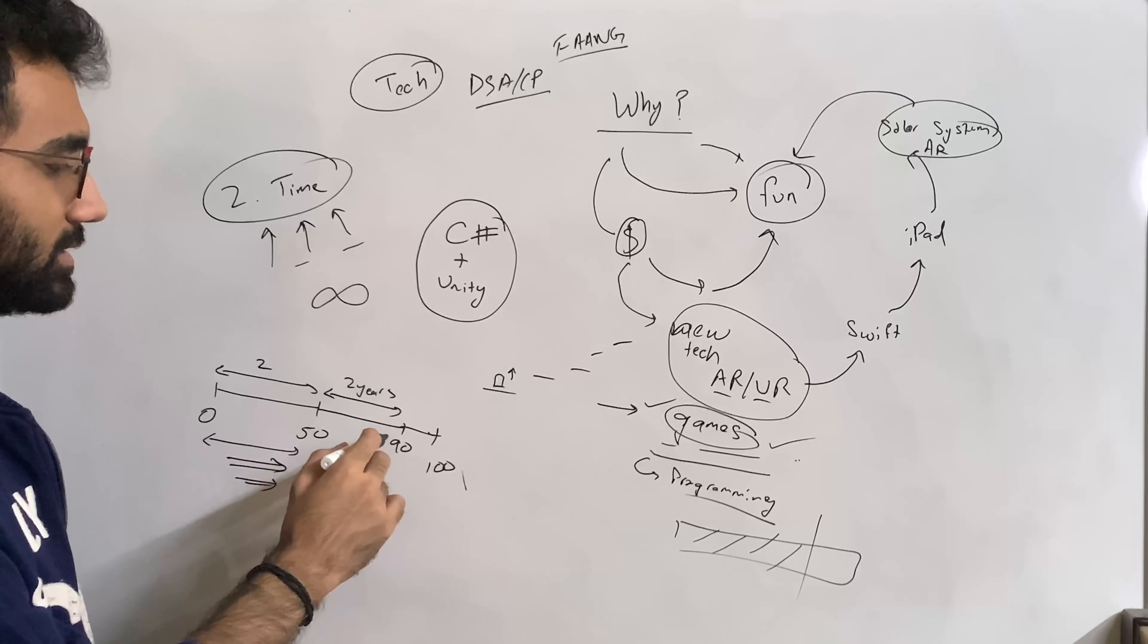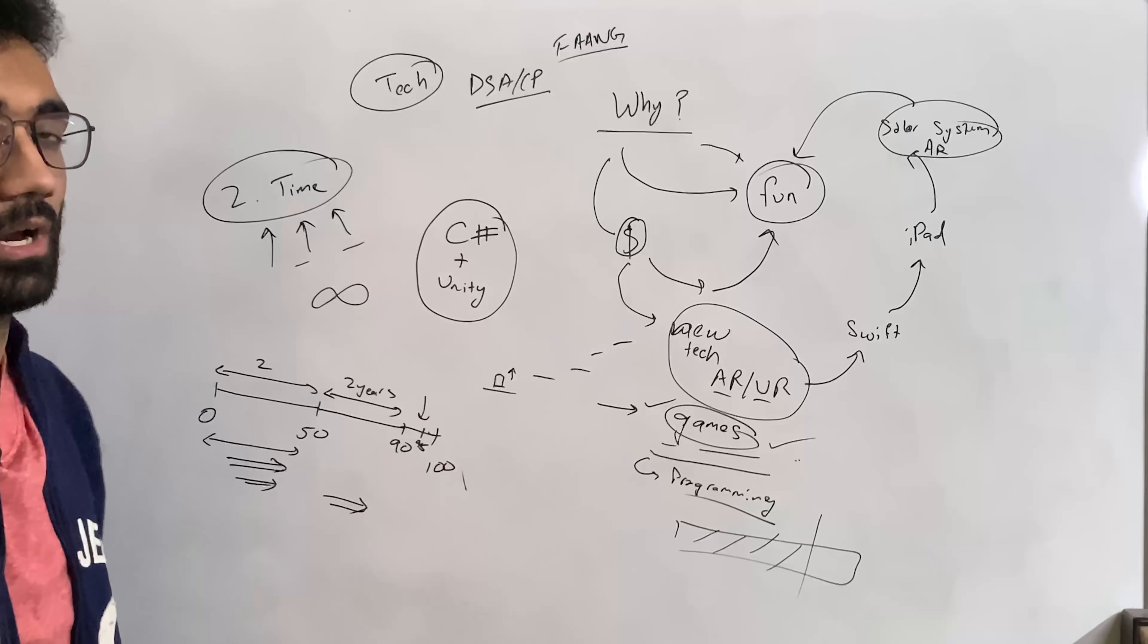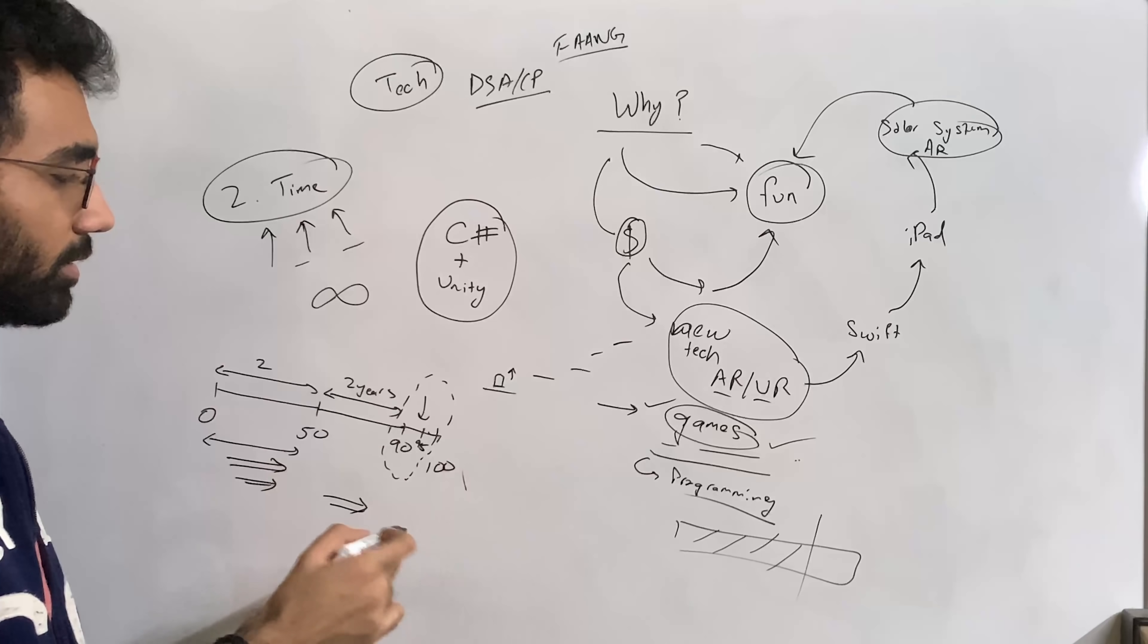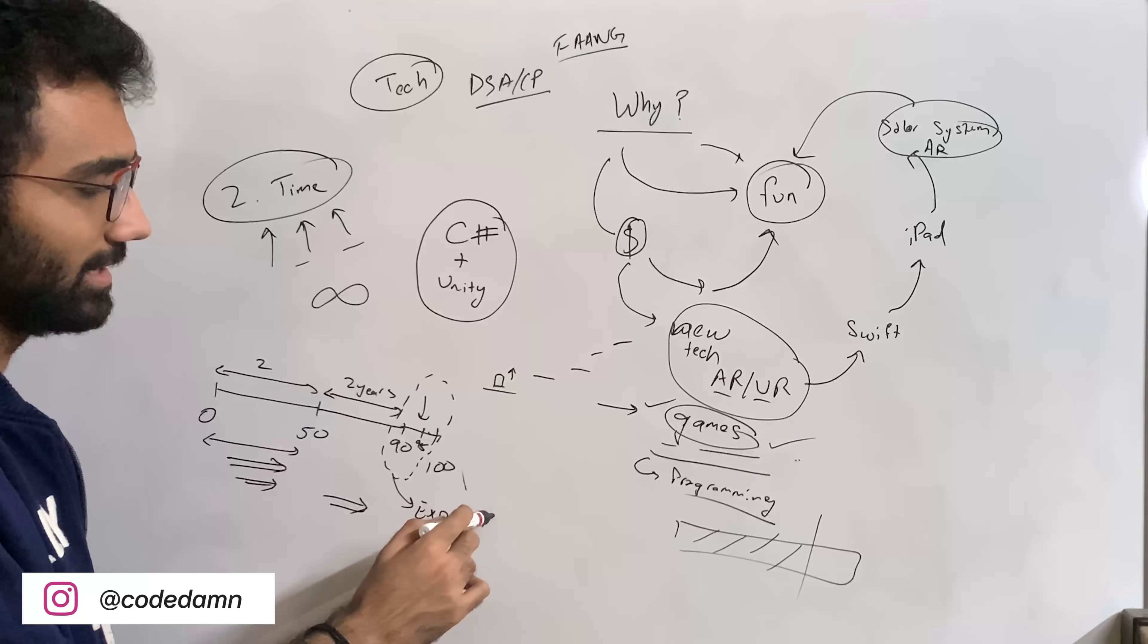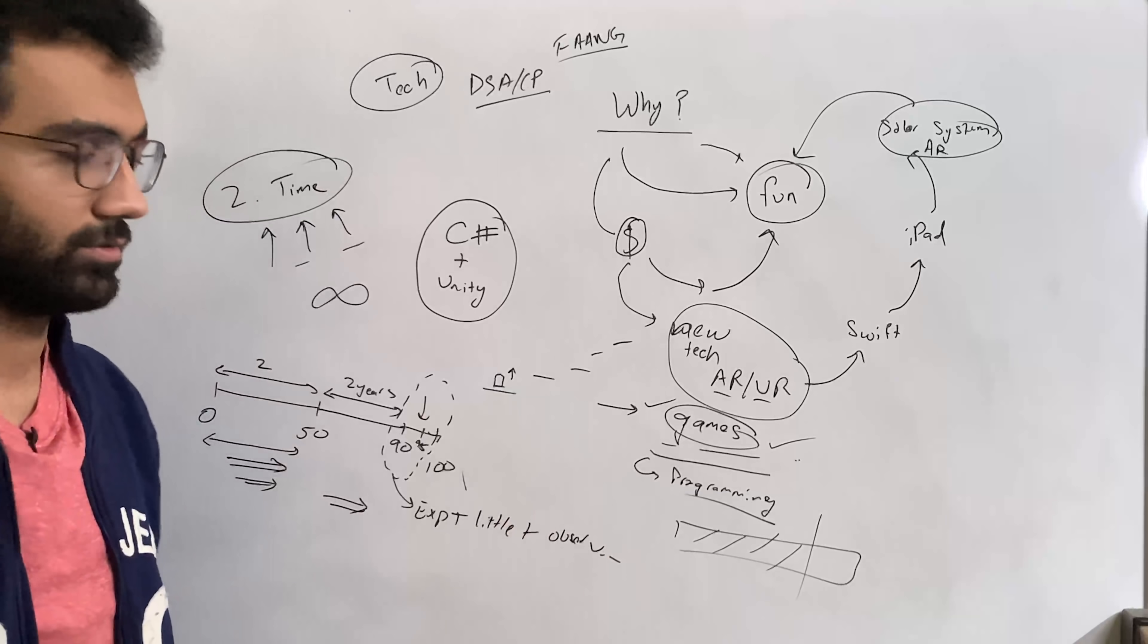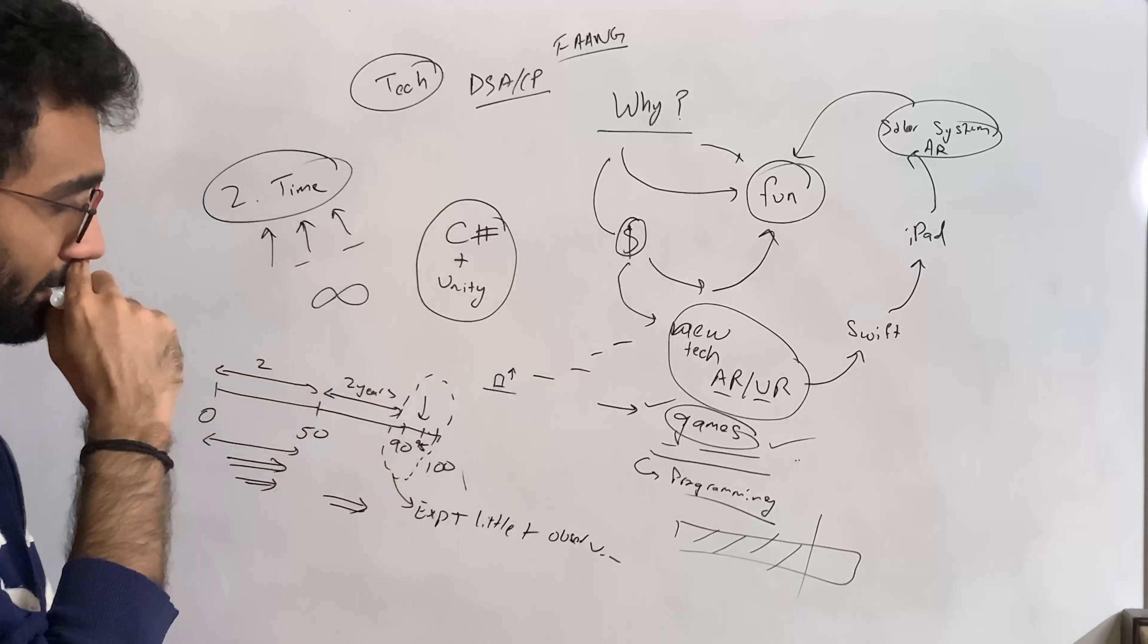Once you approach this 90-95 mark of a great programmer, there are little things - not a lot more because you've already covered a lot. This area is basically experience plus little things plus your observation skills plus your debugging skills and so on. So it's fine to not be in this area, but you have to understand that two or three months would only get you so far.